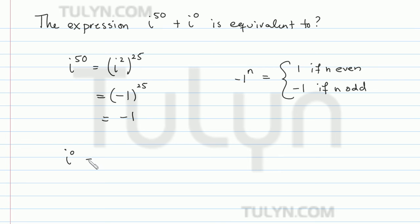i to the 0th power is just equal to 1, because remember that property of exponents that says that any number taken to the 0th power is 1, provided that that number wasn't 0 to begin with.